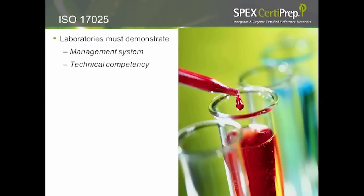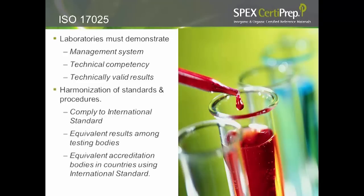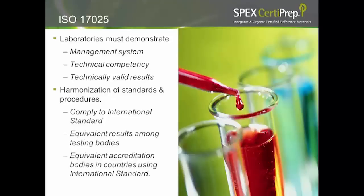ISO 17.025 is a laboratory quality management system, meaning you have a quality management system in place and must demonstrate technical competency in your field and produce technically valid results. This guide allows the harmonization of standards and procedures so you comply to an international standard. This allows labs with equivalent certifications to share results among one another — even across borders — so a lab that is 17.025 certified in the U.S. can share results with a lab also certified in Europe, Japan, or China.